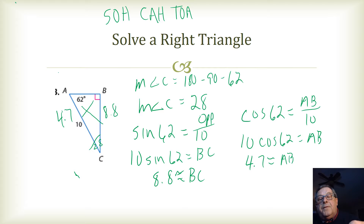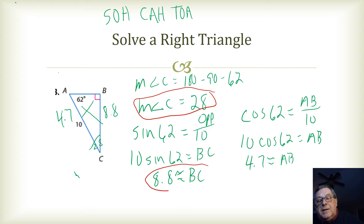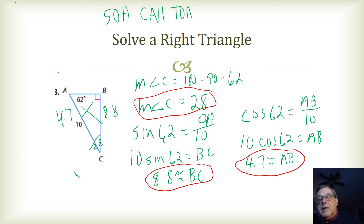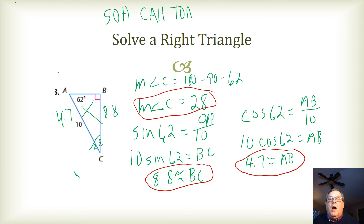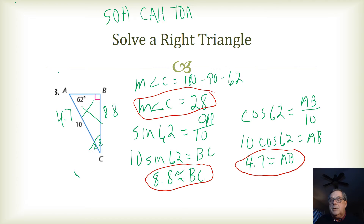We found the measure of angle C, we found the measure of side BC, and we have found the measure of side AB. We have, in fact, solved that triangle.